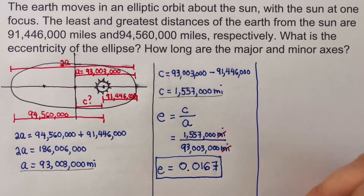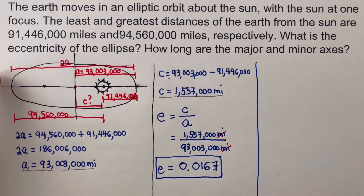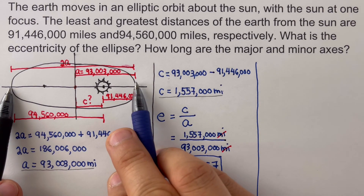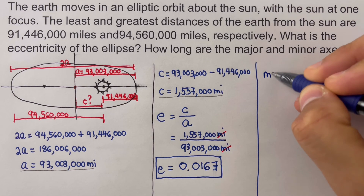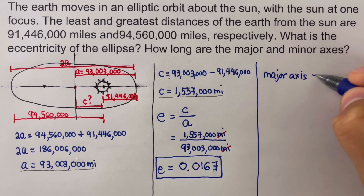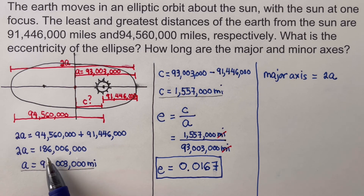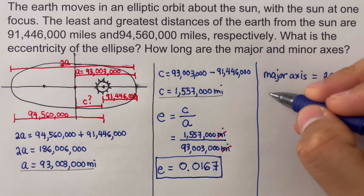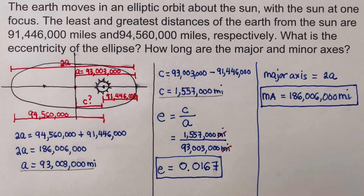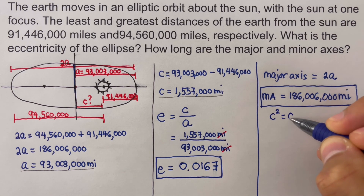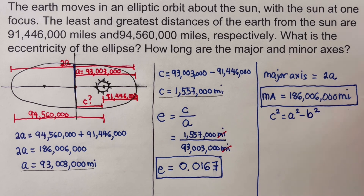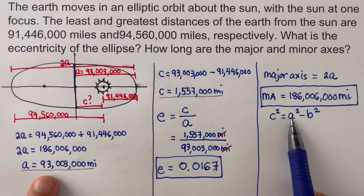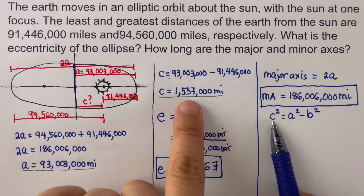We are also asked for the length of the major and minor axes. The major axis is the distance from one vertex to the other, which is 2a = 186,006,000 miles. To determine the minor axis, we use c² = a² − b², where we know both a and c, and we solve for b.